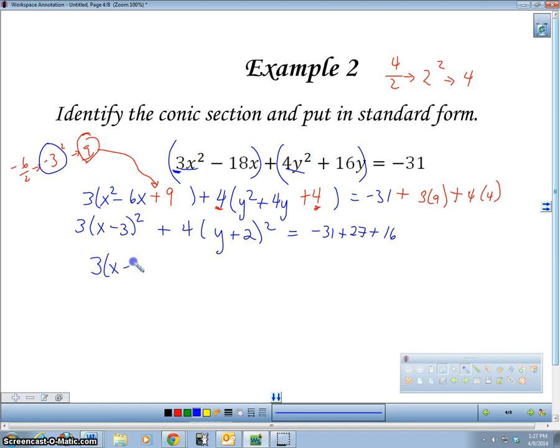So 3 times x minus 3 squared, plus 4, y plus 2 squared, equals 12. Now, right away, we can identify this, because we can see that these numbers are different. Whenever we have these two numbers different, multiplied here, this is going to be an ellipse. And if it's an ellipse, because these two are different, then we're going to want to have a 1 here, and we're going to want to have these under, a number underneath these in a denominator. So I'm going to divide.